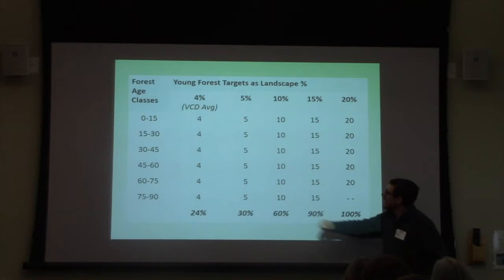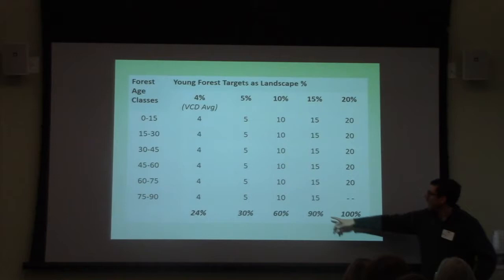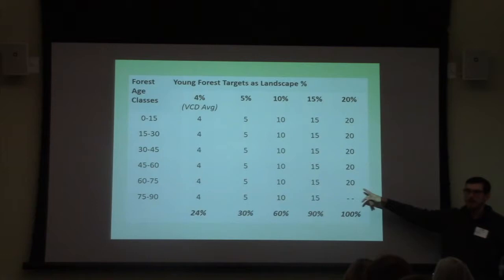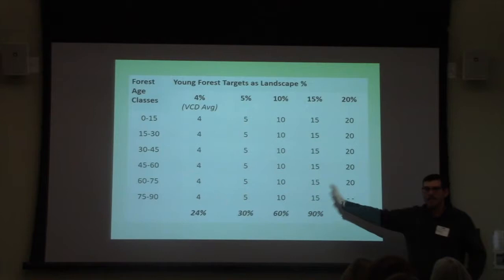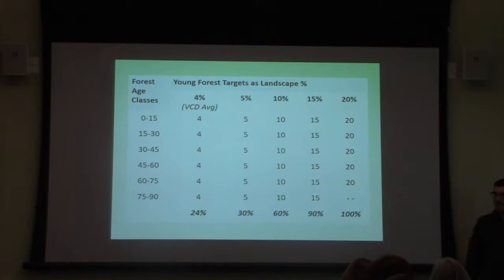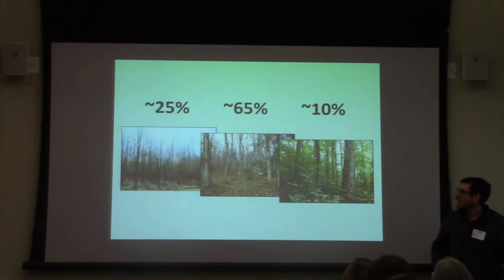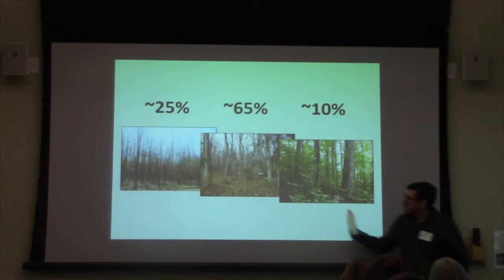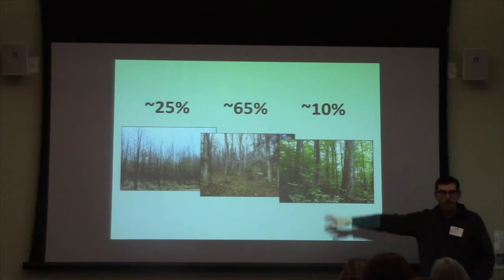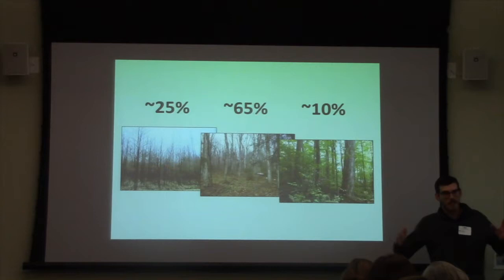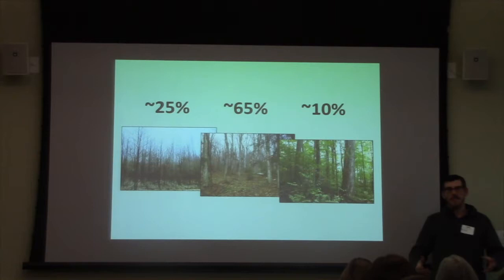If you want a bigger target — say 5% young forest — you need 30% of the landscape cycling. For 10% young forest you need 60%, and so forth. At 20% young forest, you can only grow trees to 75 years old. So if we look at the balance: roughly 25% of the landscape is working towards being young forest, 10% is old forest in the future, and there's a great middle ground with all sorts of management opportunities that can benefit both ecological and social values.